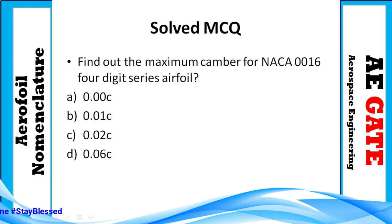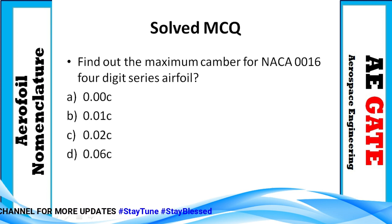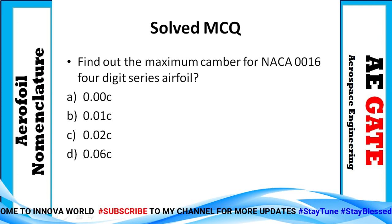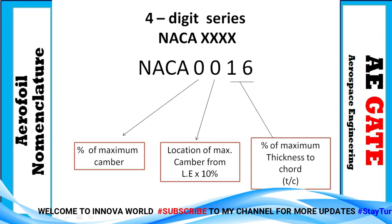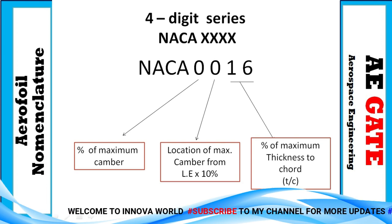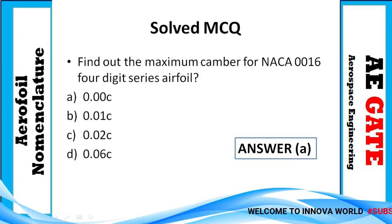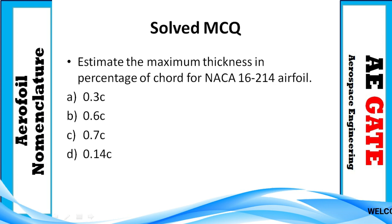MCQ 4: Find the maximum camber for NACA 0016 four-digit series airfoil. The first digit is '0', which means 0% maximum camber. So the correct answer is A — 0% of chord.